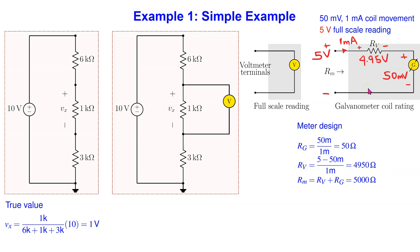The voltmeter specifications are given. We can use these to determine the effective meter resistance. When the voltage across the voltmeter is at its full-scale reading of five volts, the voltage drop across the coil must be 50 millivolts. This is used to work out the voltage drop across Rv, which is then used to find Rv. We can also find Rg and the meter resistance Rm as shown.